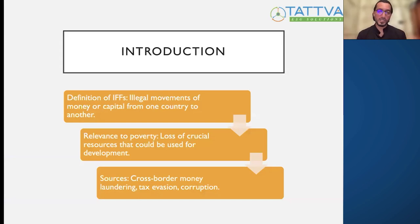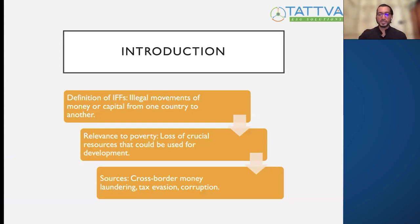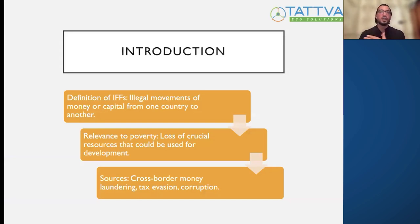How is IFF relevant to poverty? Basically, from each country there is a loss of crucial resources that could be used for development in health, education, and different sectors. The sources include cross-border money laundering, tax evasion, corruption, and trade misinvoicing — both under-invoicing and over-invoicing. All these factors come into play when we speak about illicit financial flows.